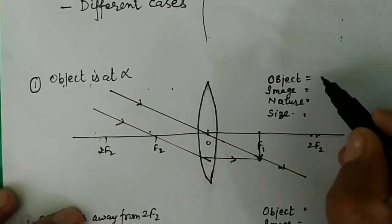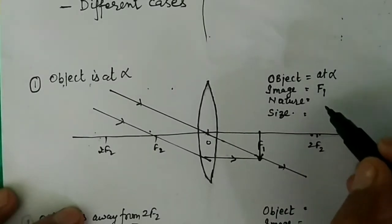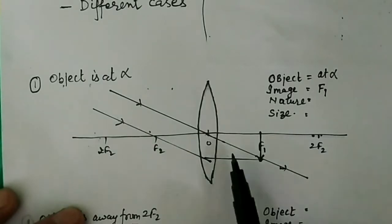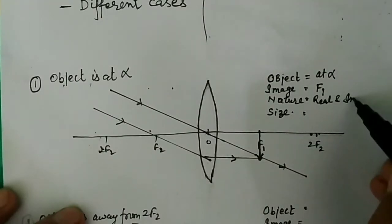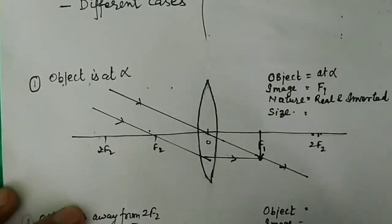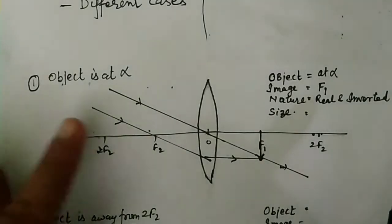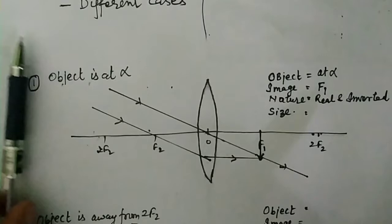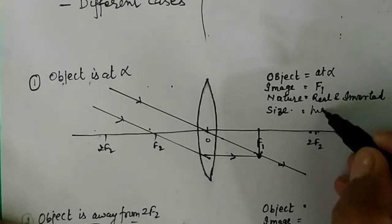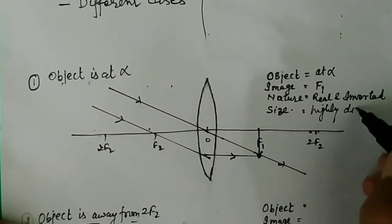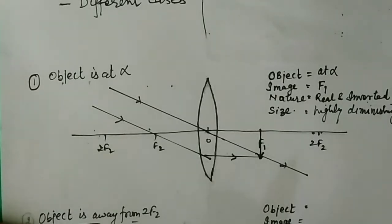What is the nature of the image? The rays are actually meeting, so the image is real. And real images are always inverted. What is the size? The size is very, very small — if this object is very far away, here the image is highly diminished. So when your object is placed at infinity, the image is real, inverted, and highly diminished.